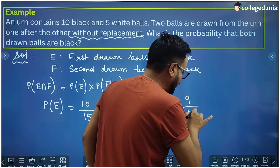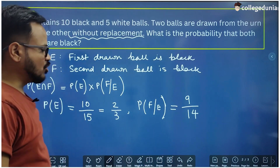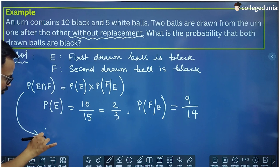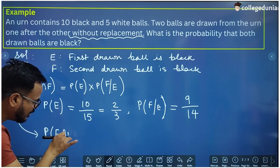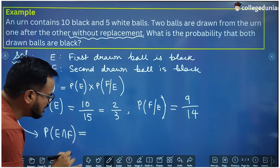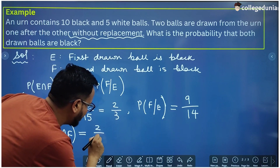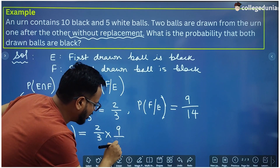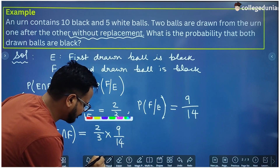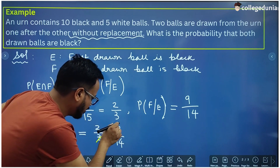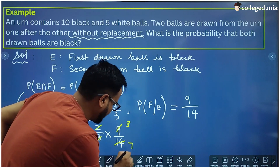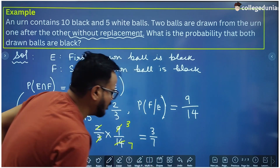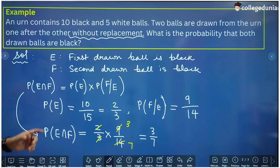So P(F|E) = 9/14. Now applying the formula, P(E∩F) = P(E) · P(F|E) = (2/3) · (9/14). Simplifying: 3 divides into 3 and 14 gives 7, so the final answer is 3/7.